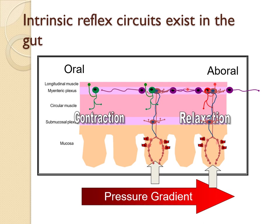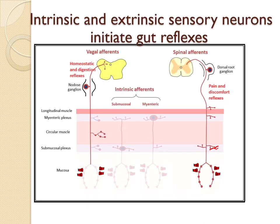Intrinsic reflex circuits exist in the gut — from the oral to the aboral side — where receptors and effects are both within the gut itself. Reflexes involving sympathetic innervation transmit signals for long distances and are called long-loop reflexes. These include: the gastrocolic reflex, where signals from the stomach cause evacuation of the colon; the enterogastric reflex, where signals from the small and large intestine inhibit gastric motility and secretion; and the colo-ileal reflex, where signals from the colon inhibit emptying of ileal contents into the colon.